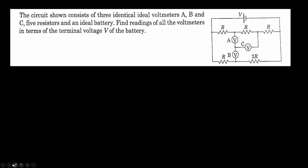Dear students, first to solve this problem, let us just ignore the presence of all these ideal voltmeters. Let us think about only resistors and battery source. Suppose if I name this point as P and this point as Q, from your understanding of voltage divider rule, we know that from point P — if I name this as point S — the voltage drop between point P to S would be V by three.